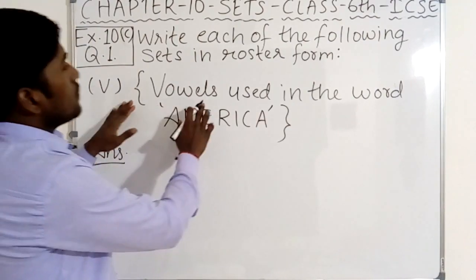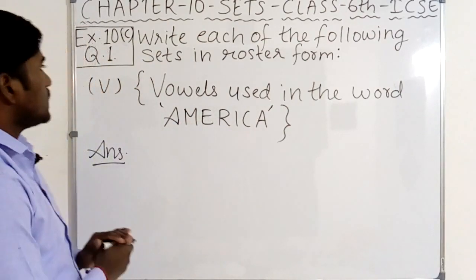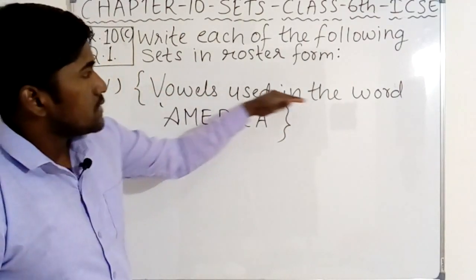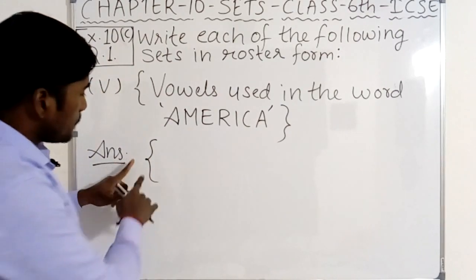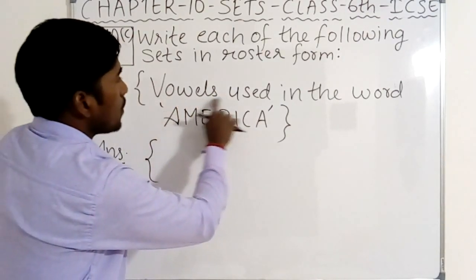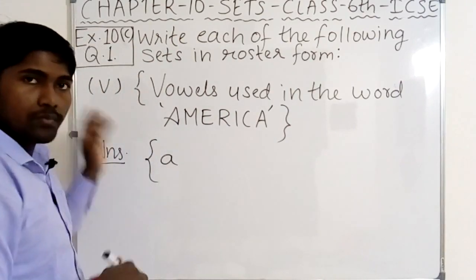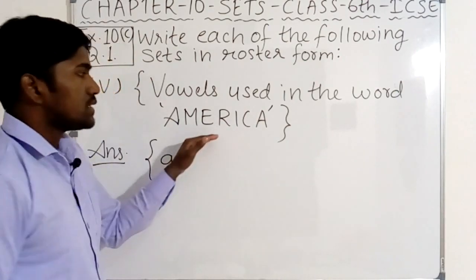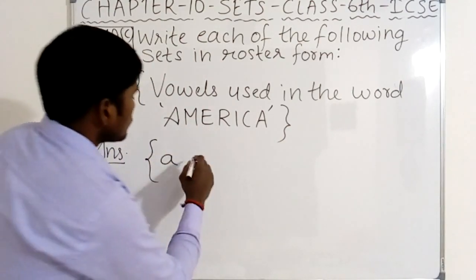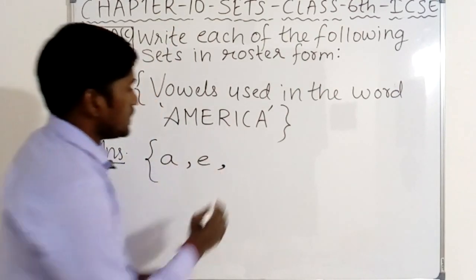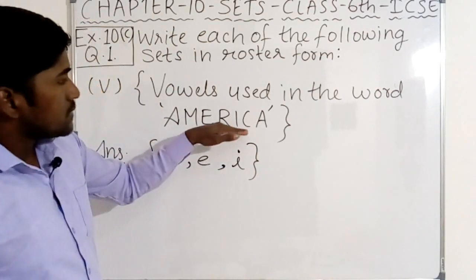Now see here fifth point. Vowels used in the word America. We have to write this in roster form. First of all, in roster form we have to make the curly braces open, then you have to write the vowels. In America, the vowels are A, E, and I. So we have the roster form for the vowels used in the word America.